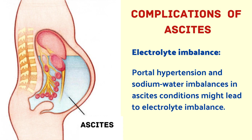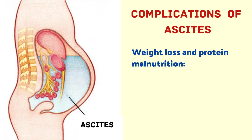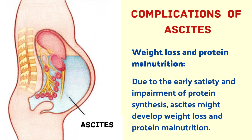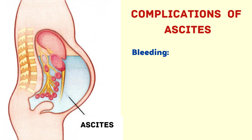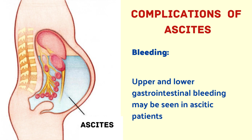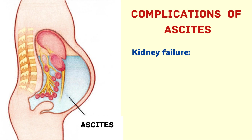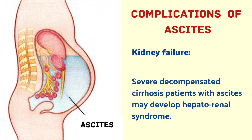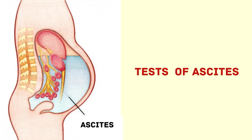The next complication is electrolyte imbalance — portal hypertension and sodium-water imbalances in ascites conditions might lead to electrolyte imbalance. The next complication is weight loss and protein malnutrition, due to early satiety and impairment of protein synthesis. The next complication is bleeding — upper and lower gastrointestinal bleeding may be seen in ascitic patients. The next complication is kidney failure — severely decompensated cirrhosis patients with ascites may develop hepatorenal syndrome.